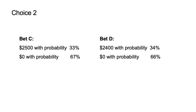For choice two, the player is again asked to choose one of two bets. Under bet C, the player wins $2,500 with probability 33%, and $0 with probability 67%. Under bet D, the player wins $2,400 with probability 34%, and $0 with probability 66%. When Kahneman and Tversky ran this experiment, 83% of participants chose option C.